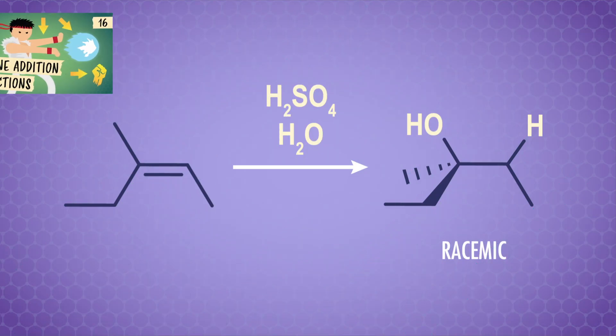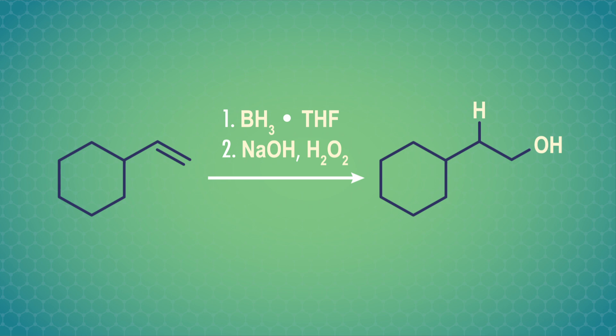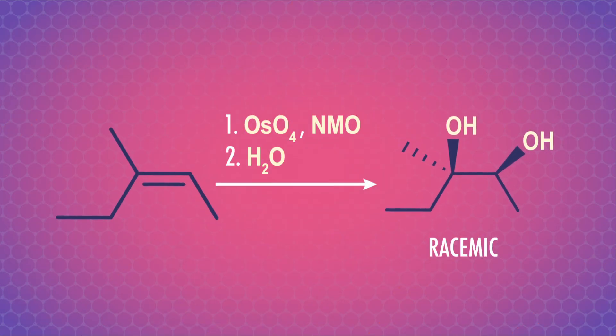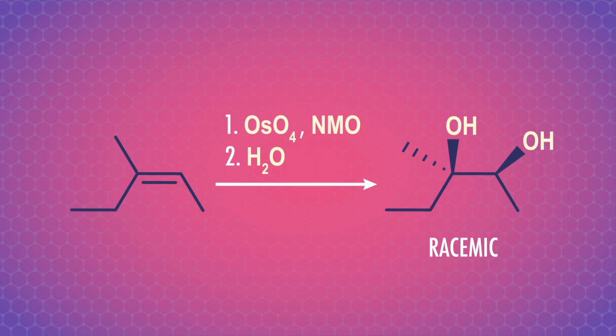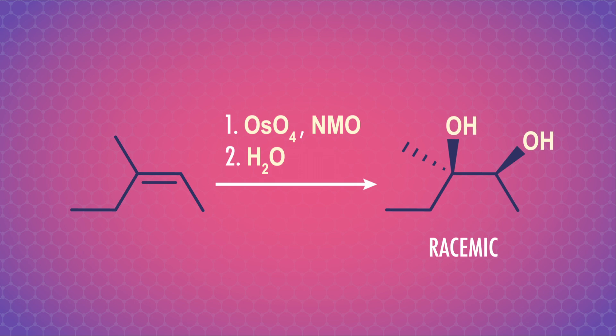We've already seen a few ways to make alcohols. Back in episode 16, we saw how acid-catalyzed hydration of alkenes can add water across the double bond. Markovnikov's rule tells us that the proton adds to the carbon in the double bond with the most hydrogens attached. We also saw that with certain special reagents, the opposite happens – we get the anti-Markovnikov product. Another way of making alcohols from episode 20 is using substitution reactions – mixing a haloalkane with sodium hydroxide causes the hydroxyl group to displace the halide ion. We can also create a diol by reacting an alkene with osmium tetroxide, producing a syn-diol.